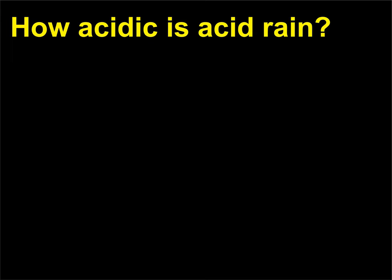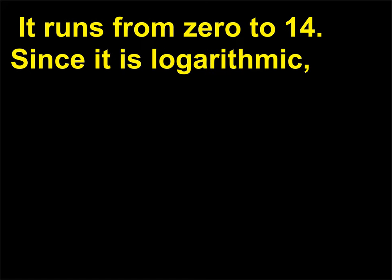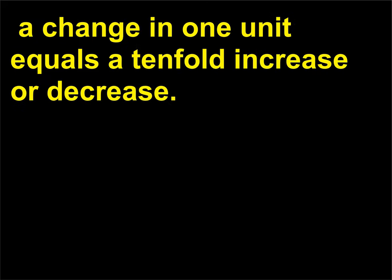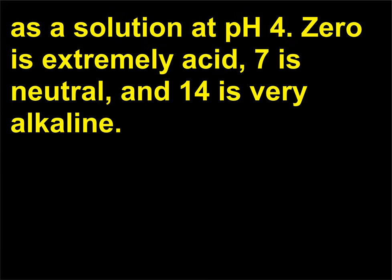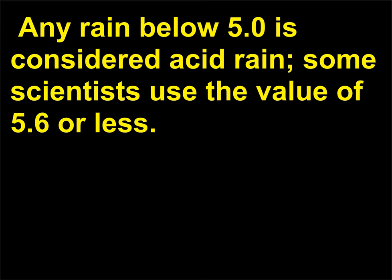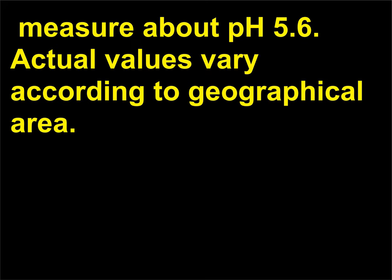The acidity or alkalinity is measured by a scale known as the pH (potential for hydrogen) scale. It runs from 0 to 14. Since it is logarithmic, a change in one unit equals a tenfold increase or decrease, so a solution at pH 2 is 10 times more acidic than one at pH 3 and 100 times as acidic as a solution at pH 4. Zero is extremely acid, 7 is neutral, and 14 is very alkaline. Any rain below pH 5.0 is considered acid rain (some scientists use the value of 5.6 or less). Normal rain and snow containing dissolved carbon dioxide, a weak acid, measure about pH 5.6.